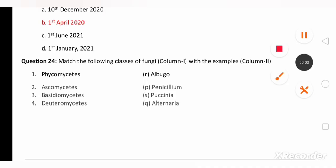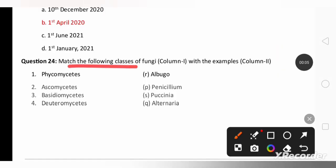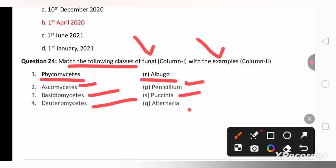In the next question we can find match the following classes of fungi with example. I have matched here: Phycomycetes example Albugo, Ascomycetes Penicillium, Basidiomycetes Puccinia, Deuteromycetes Alternaria.